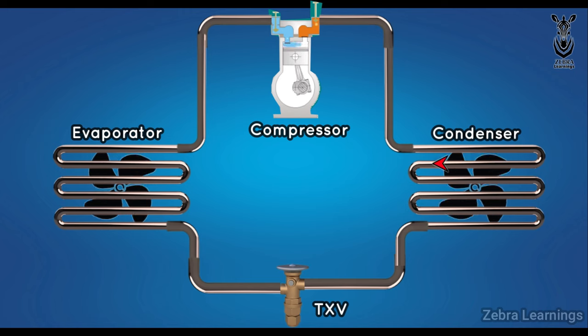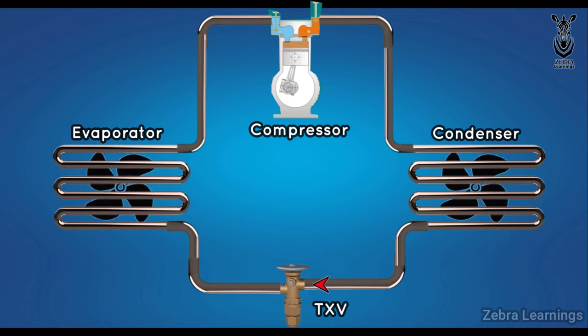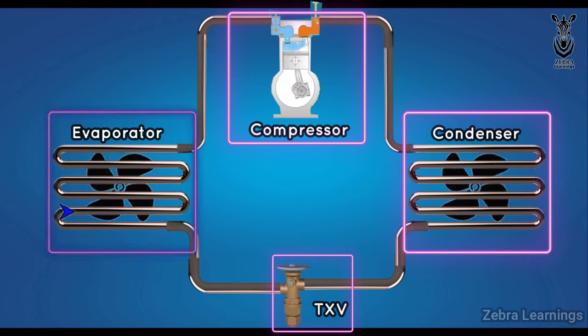Important points that can be covered in this topic are: There are four components in the refrigeration cycle - compressor, condenser, expansion valve, and evaporator.